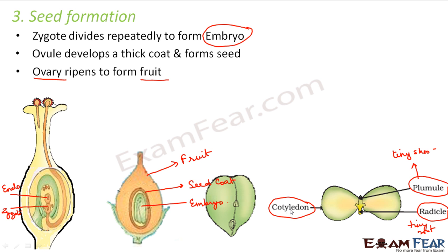The cotyledons are the organs which store food. For any living organism to grow it needs energy, and energy comes from food — so this seed, in order to grow, gets food from the cotyledons. A seed can have one cotyledon or two cotyledons. Monocots are those plants whose seeds have one cotyledon, and dicots are those plants whose seeds have two cotyledons. For more detail, refer to Diversity in Living Organisms of Class 9.